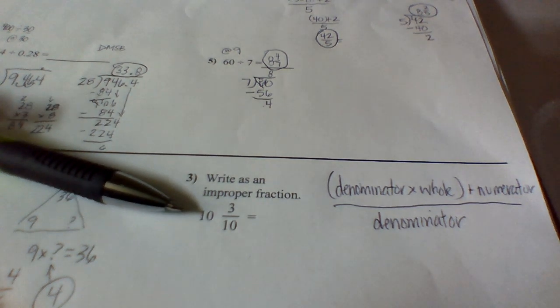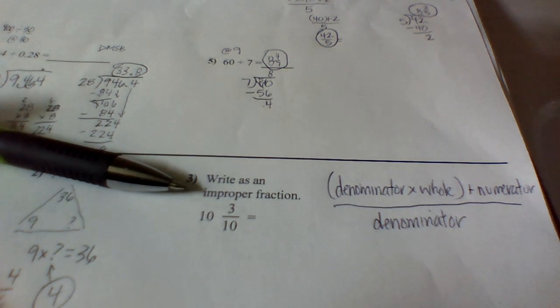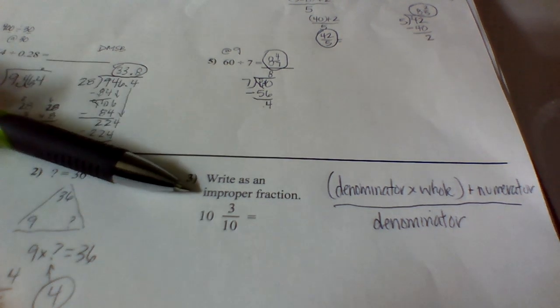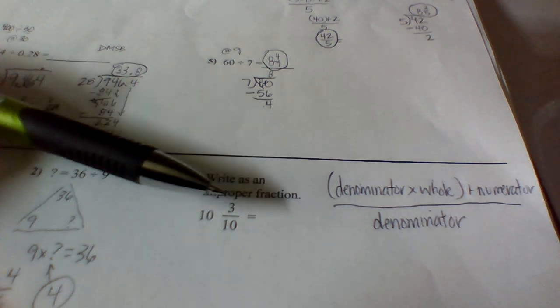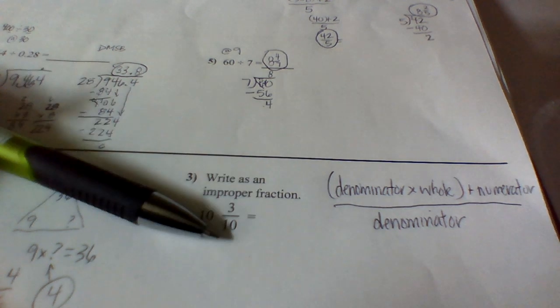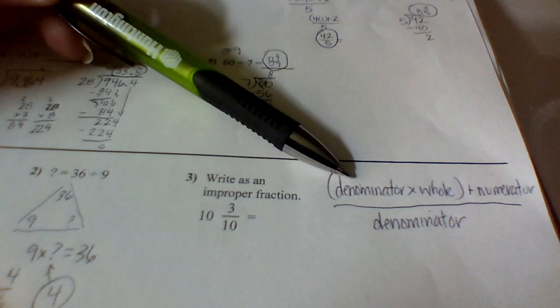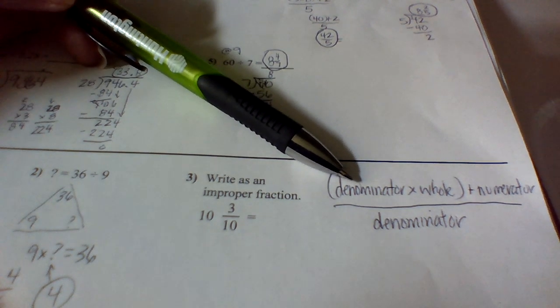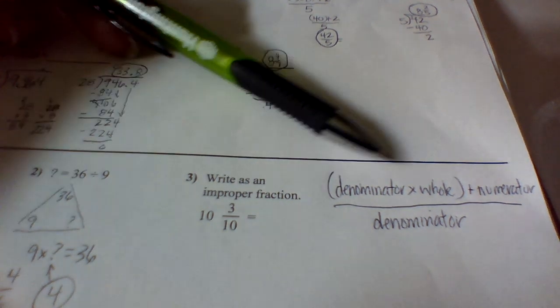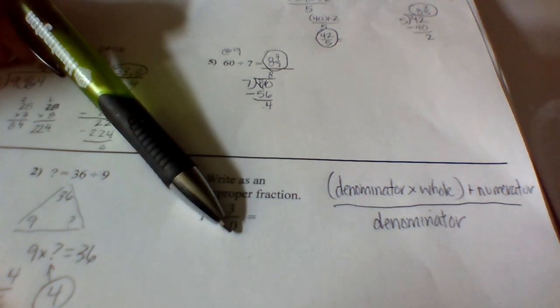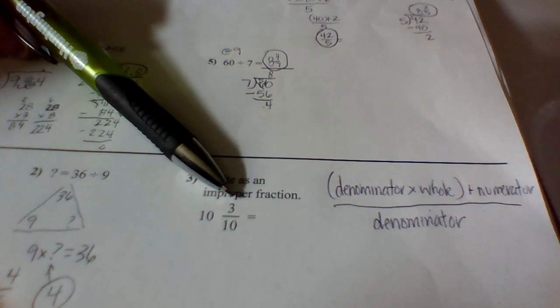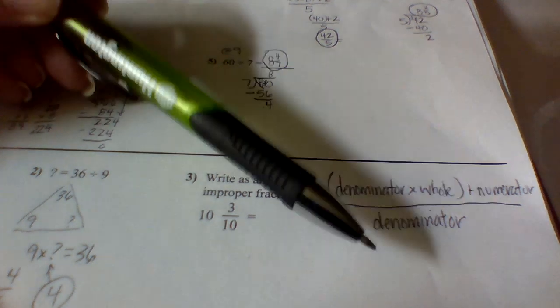On the next one, we're writing it as an improper fraction. Remember that this means that my number on top, my numerator, is larger than my denominator, the number on the bottom. So here's my formula I would use for that. I do my denominator times my whole. So I'm doing 10 times 10 plus 3. And we do all of that over 10.